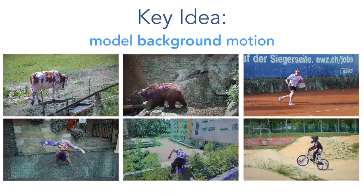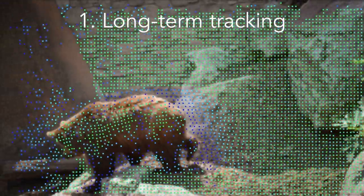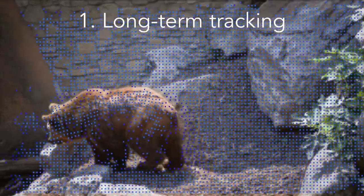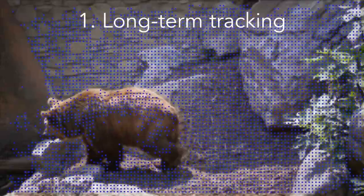A standard way to leverage motion for this task is to compute long-term tracks and then apply clustering techniques to group them. The affinity functions used in clustering methods typically assume a 2D translational motion model, then rely on the clustering process to group tracks despite deviations from this model. Our method instead uses more flexible, homography-based motion models, and focuses explicitly on modeling the motion of the background.